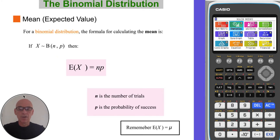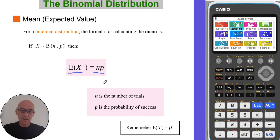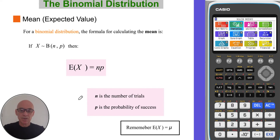For a binomial distribution, we can calculate the mean, or the expected value, notated E(X), by just multiplying the number of trials by the probability. Remember also that E(X) is sometimes called mu. This formula is given in the formula booklet, and it only works for a binomial distribution.